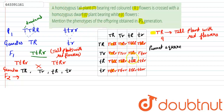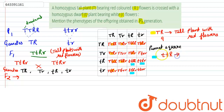Next, we can see small t small t with capital R small r; small t small t with one capital R; and small t small t with both capital R. This condition, in which there is small t small t and at least one capital R, they are three in number. This is a homozygous recessive form for height, so the plant will be dwarf with red flowers.